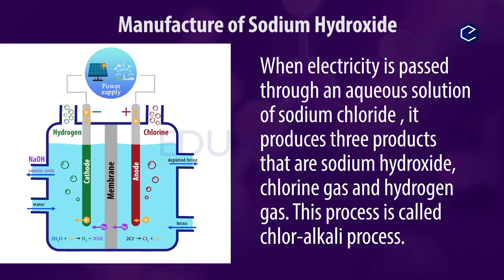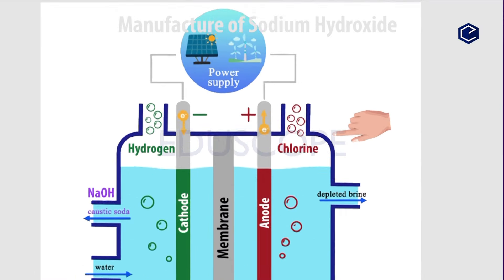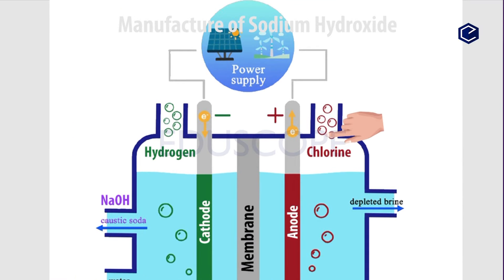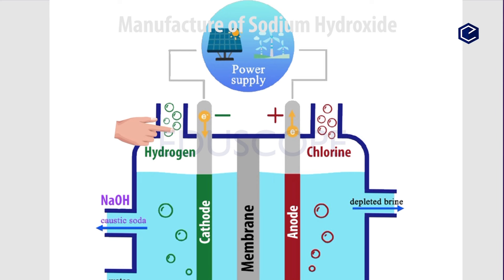In the Chloralkali Process, Chlorine Gas is produced at the anode and Hydrogen Gas is released at the cathode. Sodium Hydroxide is formed at the cathode side as well.